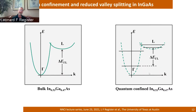For high-mobility III-V materials, the effect is just the opposite. You want all the carriers in the gamma valley, but quantum confinement reduces the inter-valley separation, making the peripheral valleys — which you don't want — more available to carriers.